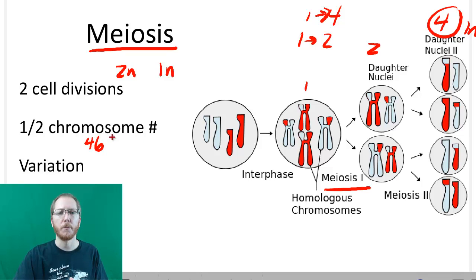So in humans, our normal diploid number is 46, so our haploid number is 23. If your diploid number was 50, your haploid number would be 25. If your diploid number was 100, your haploid number would be 50.